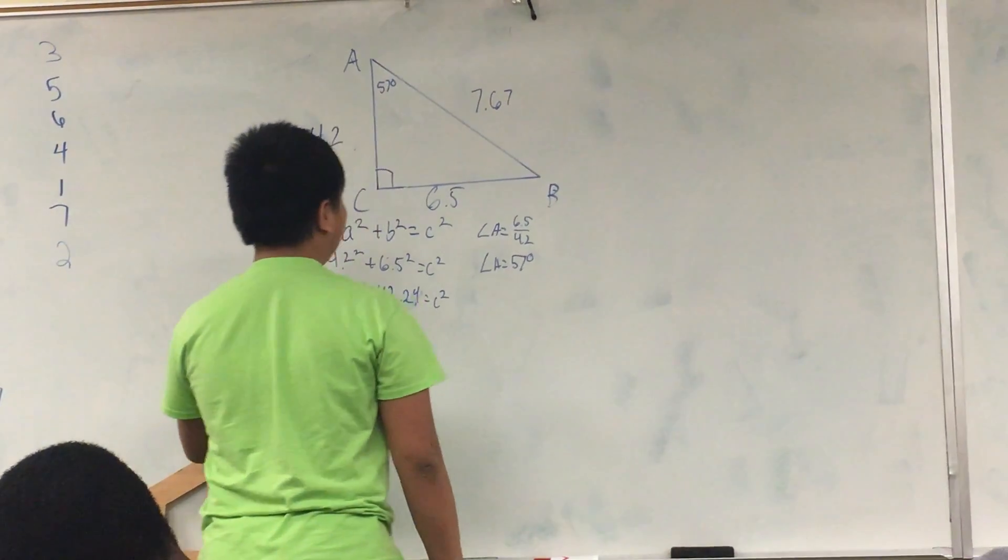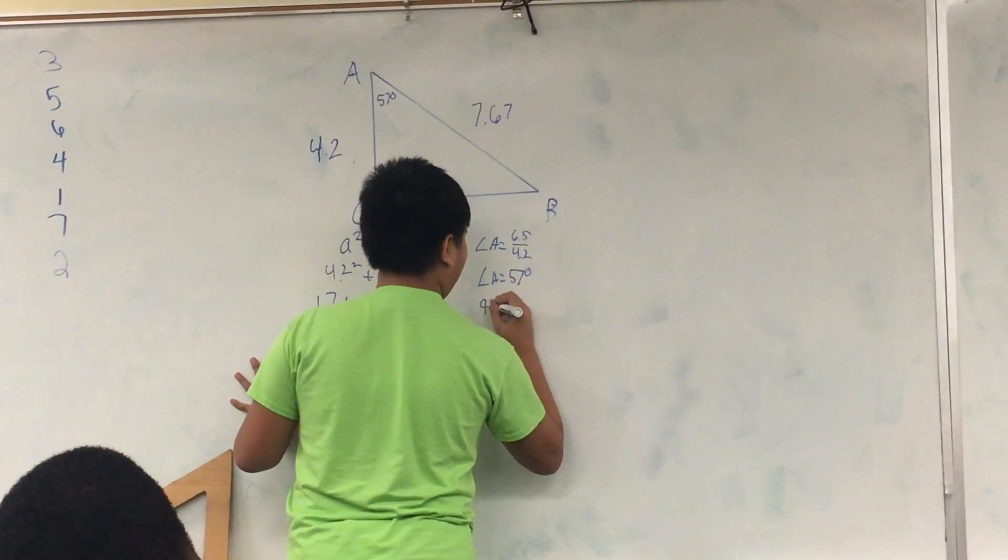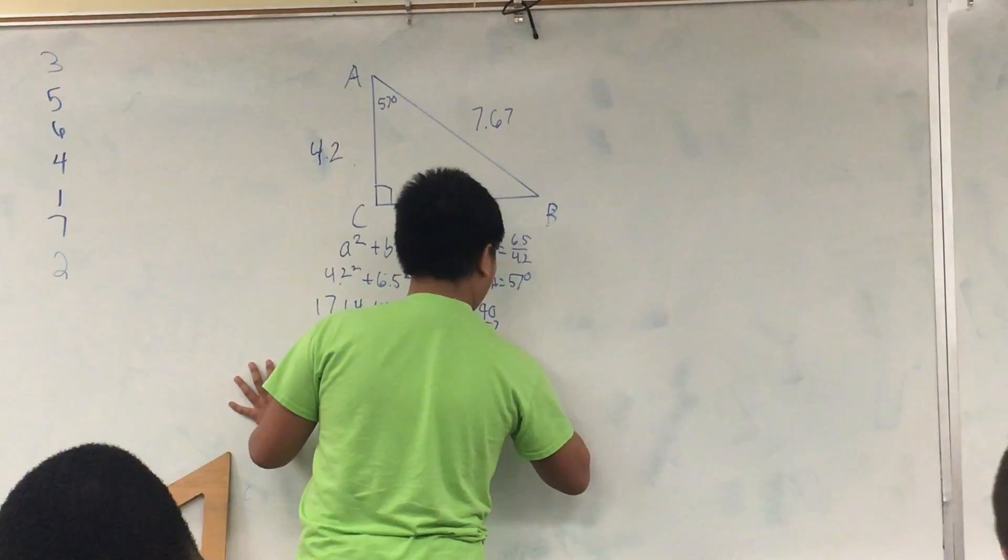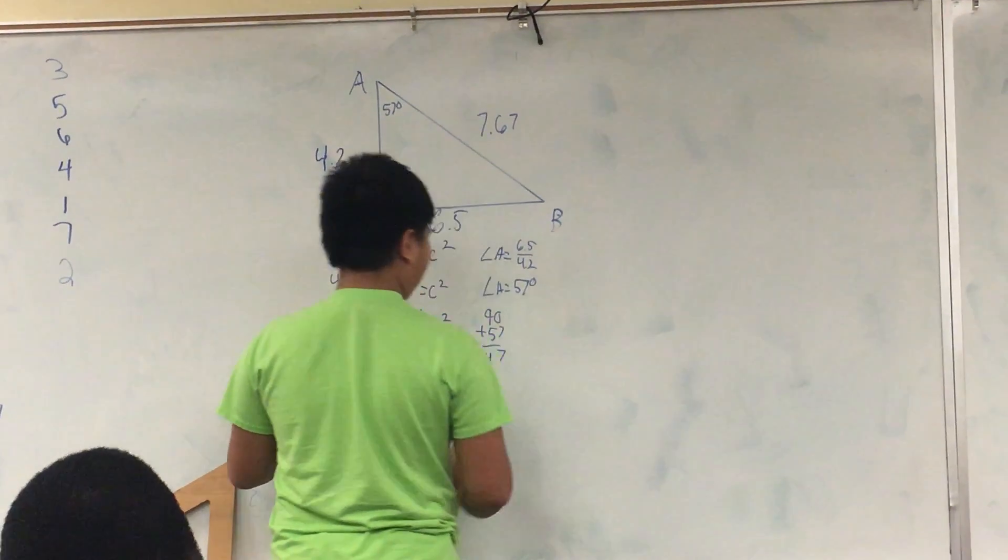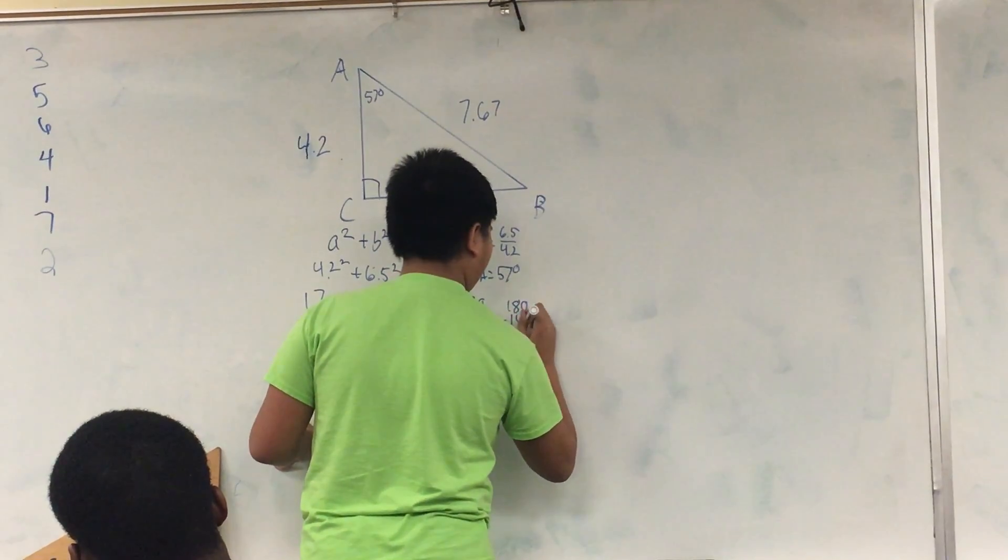With that answer, find that other angle. 90 plus 57 equals 147. 180 minus 47 equals 33.